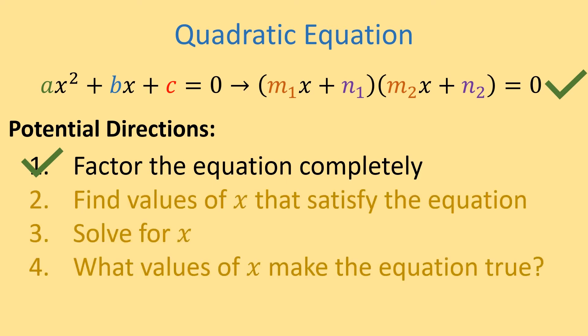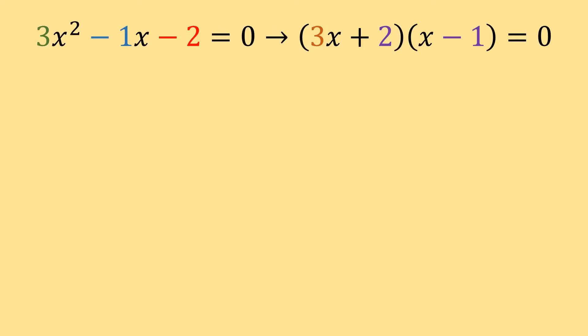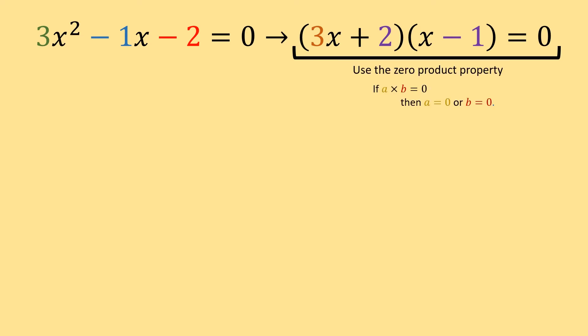Those directions are all asking the same thing. Let's look at the quadratic equation 3x squared minus x minus 2 equals 0 — the same thing as the factored form: the quantity 3x plus 2 times the quantity x minus 1 equals 0. We can use the zero product property on this factored form. The zero product property tells us that if a times b is equal to 0, then a equals 0 or b equals 0.